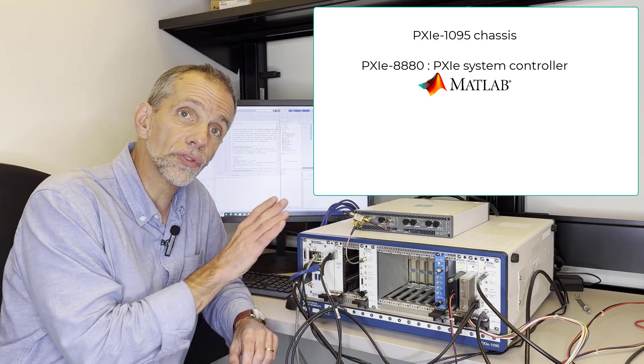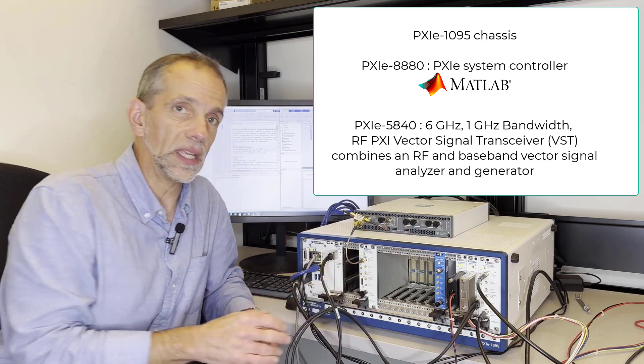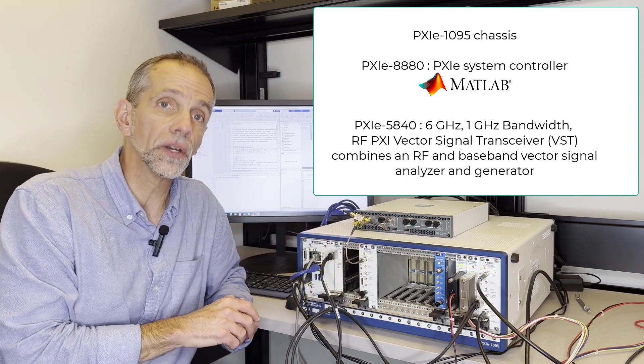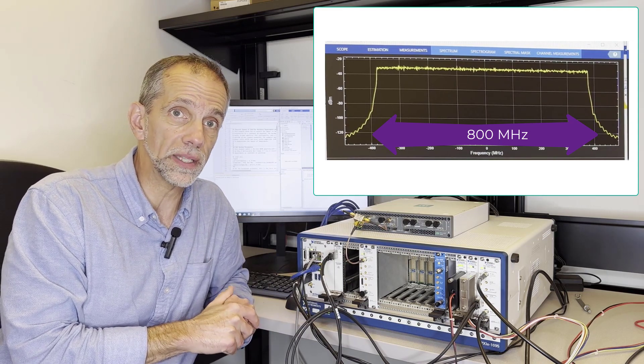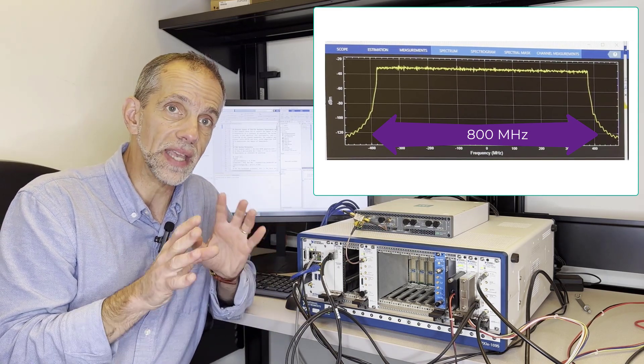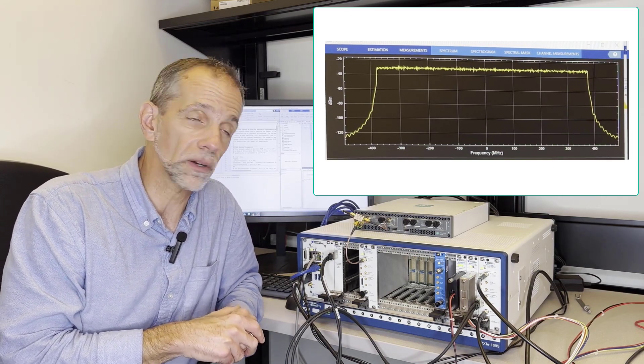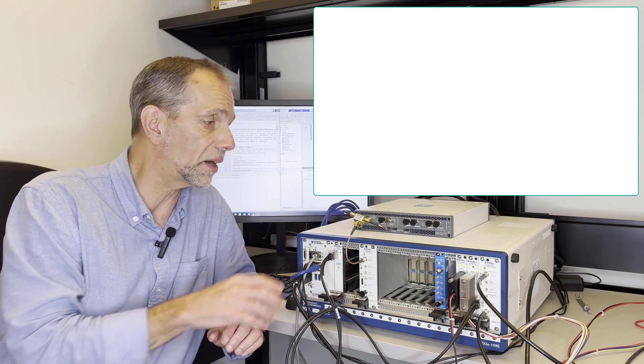It will control this RFSG, RF signal generator, and it will come out of this wire with an 800 megahertz wide signal. Now that far exceeds any max bandwidth that 5G can muster. Max 5G bandwidth is 400 megahertz. We are pumping out 800 right here.